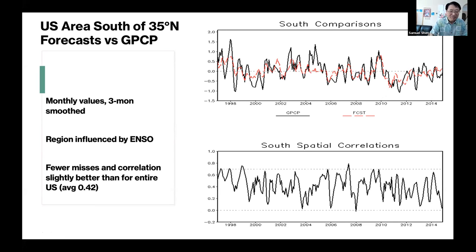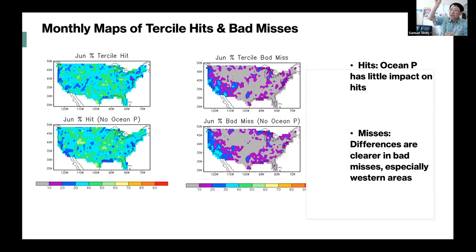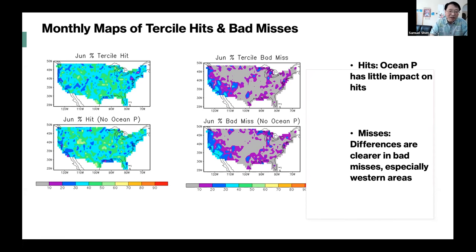Another test of skill uses a heat map — above normal, normal, below normal categories. A mismatch is a bad hit: predicting the top 30% when the truth is the bottom third. We find more misses in June when ocean precipitation is excluded as a predictor, suggesting that oceanic precipitation is helpful.